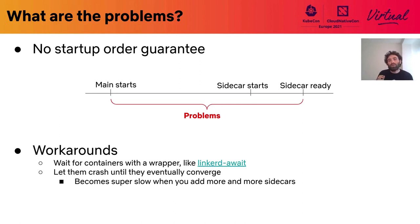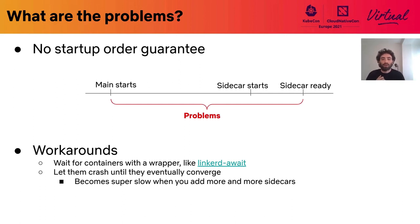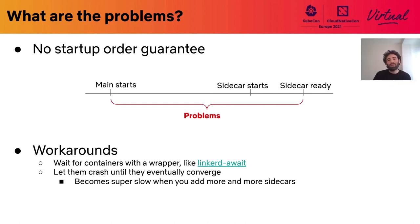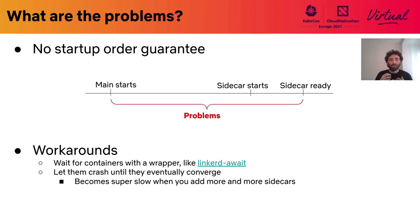Another workaround is to change your container entry point — for example, with a script that waits for other sidecars to be ready and only then starts the main process. An example of this is the linkerd-await command that waits for Linkerd to become ready and then executes your container process. This has a lot of downsides and becomes impossible with a lot of sidecars. It defeats the promise of augmenting functionality without changes to the main container, and couples containers completely.